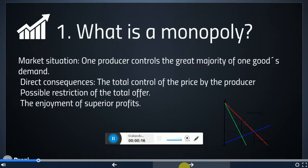First, what is a monopoly in general? This is a kind of market situation characterized by the existence of one producer which controls the great majority, almost the total offer, of one good.